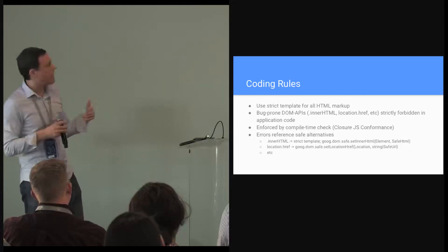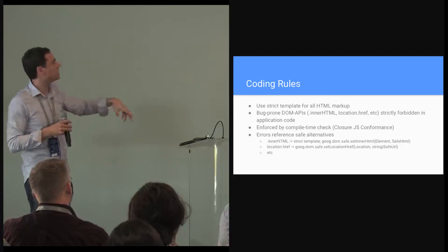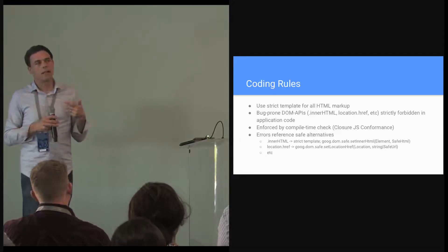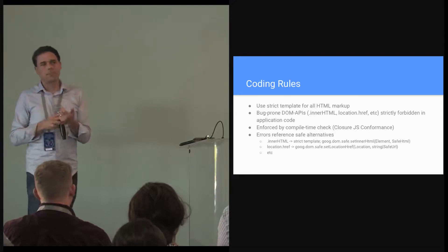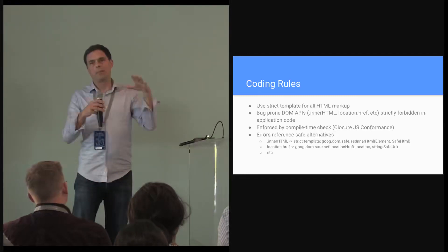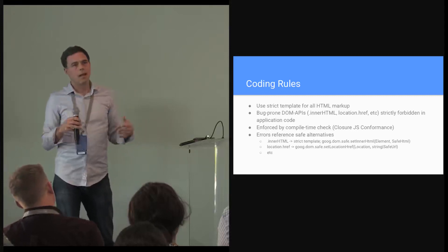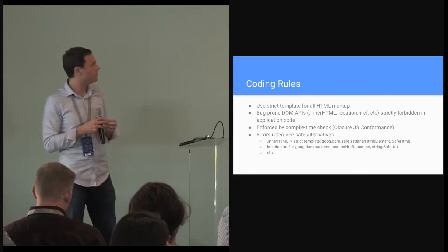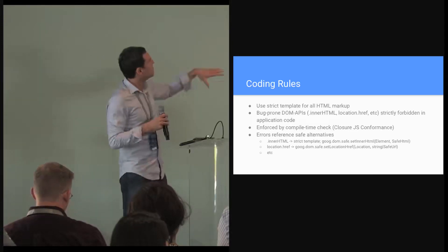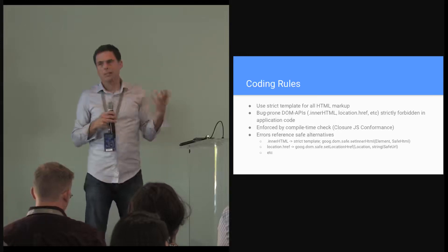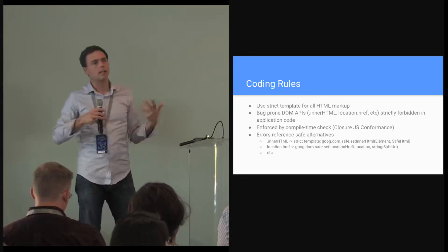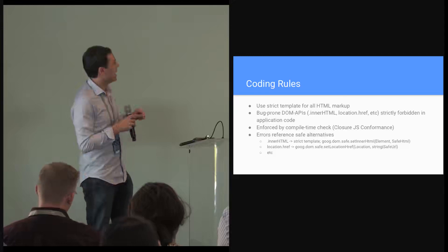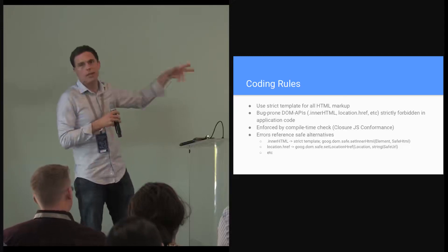The other part of this is coding rules that essentially prohibit the use of regular injection-prone DOM APIs. Assignments to innerHTML and assignments to location.href are basically banned from application code. Instead, you're supposed to use a safe wrapper — for instance, rendering one of those templates, or using a little wrapper for assignments to location.href that does sanitization at runtime. We're layering on top of the DOM API that's full of sharp edges a wrapper API that is safe, relying mostly on these types to achieve that safety. These constraints are enforced by our compile-time check — essentially a whitelist of call sites — so the only assignments to innerHTML should occur inside those wrapper libraries, never in application code.